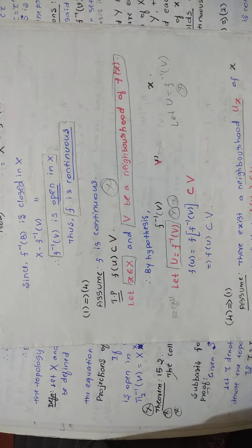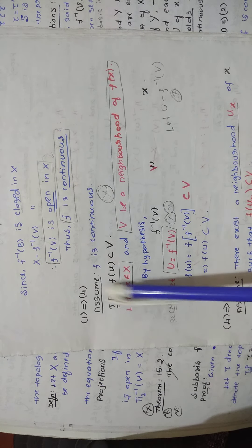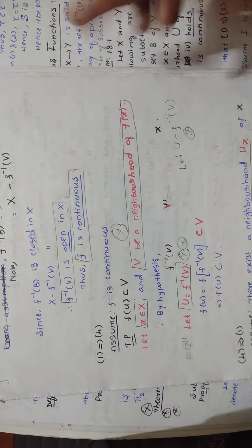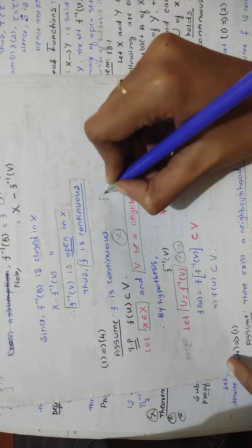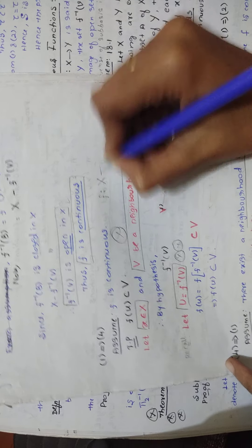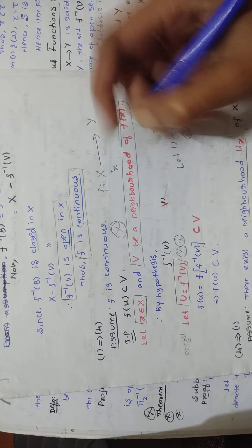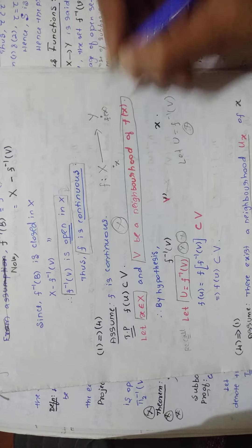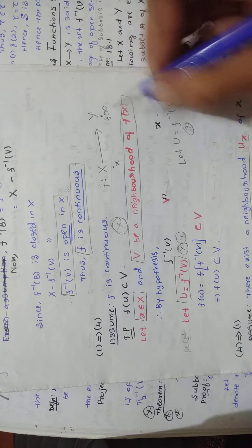So here I will be explaining '1 implies 4'. The first condition is that f is continuous — that is our assumption — and we are going to prove the fourth condition, that is f(U) is contained in V. The function f is from topological space X to topological space Y. There is a point x in X and its image is f(x) in Y.